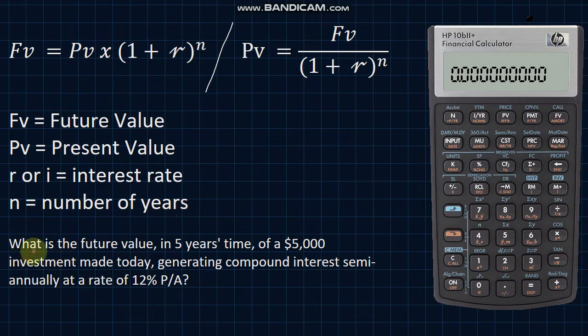So let's work through this problem. What is the future value in 5 years' time of a $5,000 investment made today, generating compound interest semi-annually at a rate of 12% per annum? So first we need to identify our variables. We're given that we want to see what it's like in 5 years' time. The initial investment is $5,000.